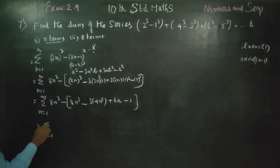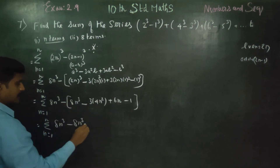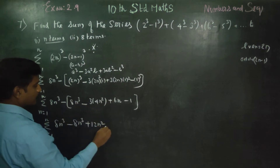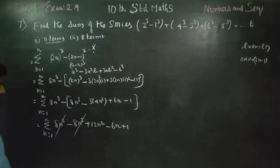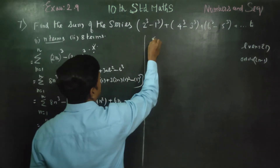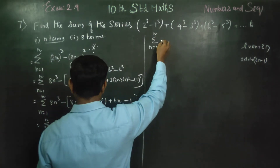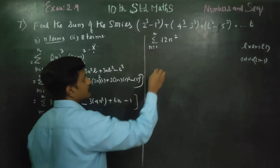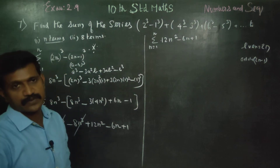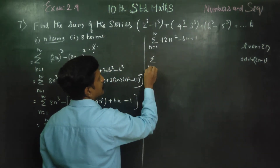Sigma n is equal to 1 to n of 8n cube minus 12n squared plus 6n minus 1. The 8n cube terms cancel. We are left with sigma n equals 1 to n of minus 12n squared, plus 6n, minus 1. After cancellation, sigma n equals 1 to n of 12n squared minus 6n plus 1.